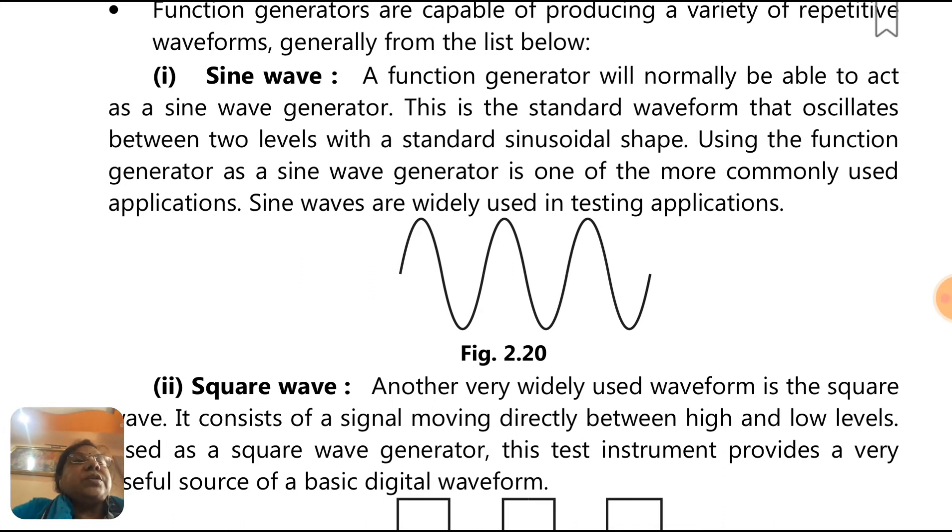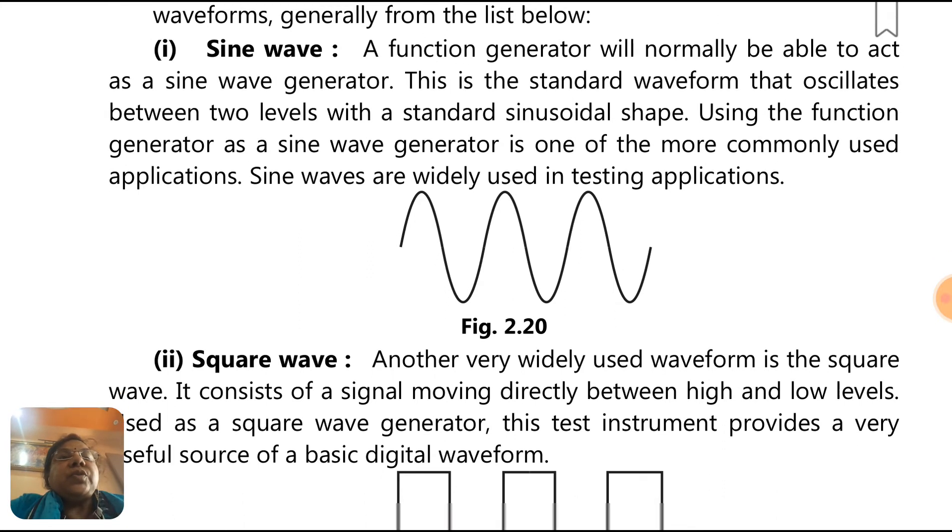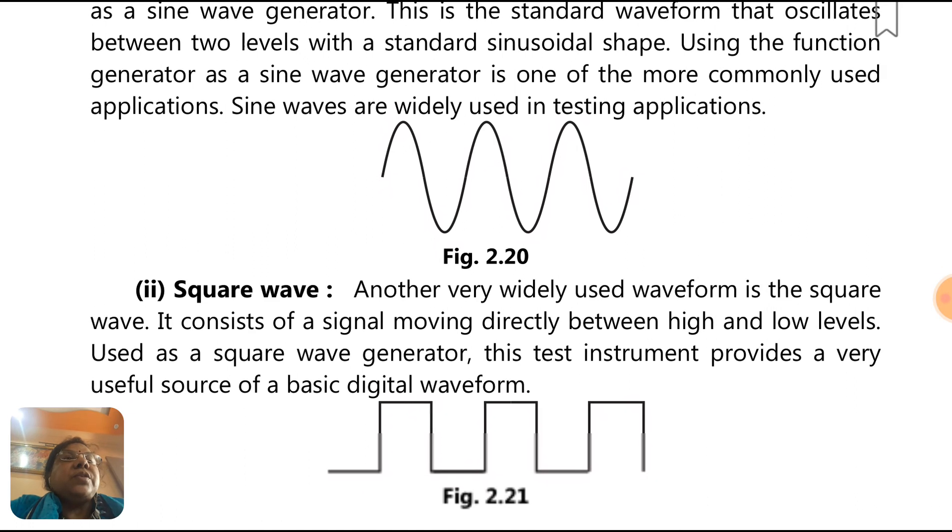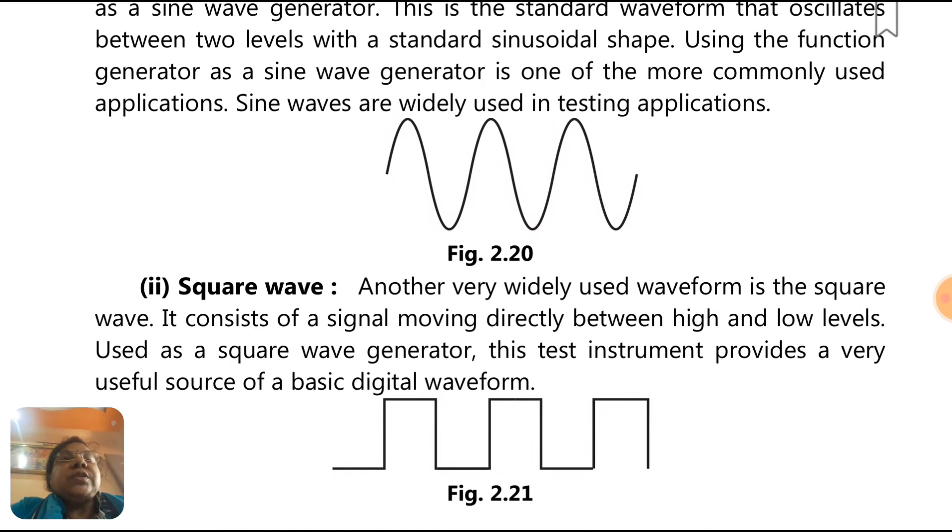The sine wave: function generator will normally be able to act as a sine wave generator. This is the standard waveform that oscillates between two levels with a standard sinusoidal shape. Using the function generator as a sine wave generator is one of the more commonly used applications. Sine waves are widely used in testing applications.